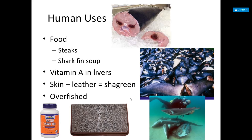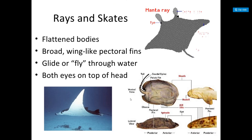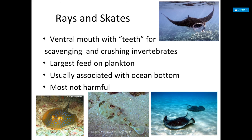Rays and skates have flattened bodies and broad, wing-like pectoral fins — they glide or fly through the water. Both eyes are on top of their head. They have a ventral mouth but rather than teeth they mash their food with their jaw. The largest rays feed on plankton. They are usually associated with the ocean bottom and are mostly not harmful.